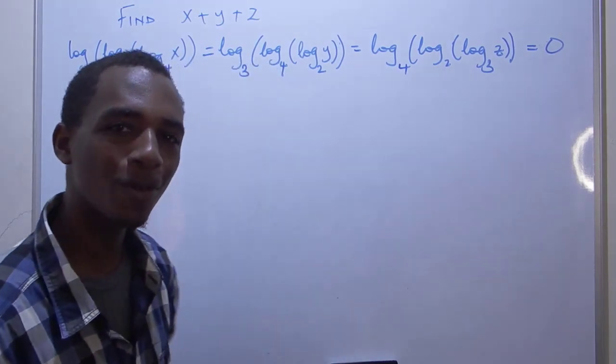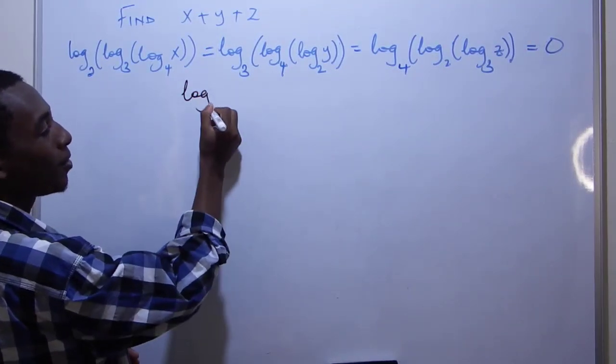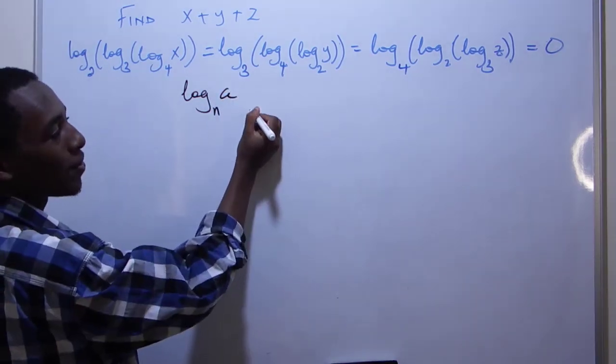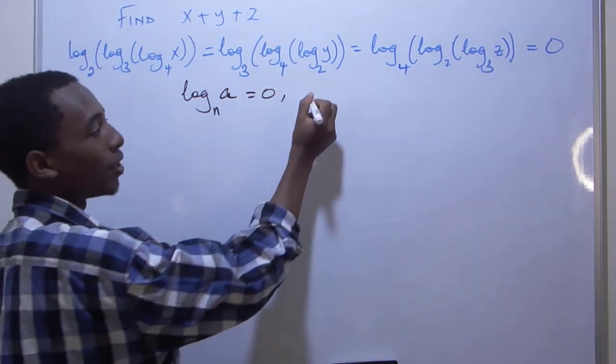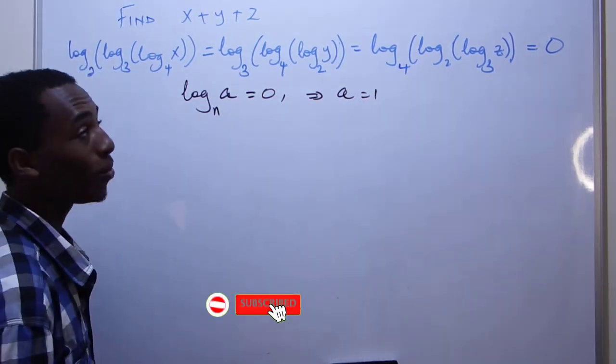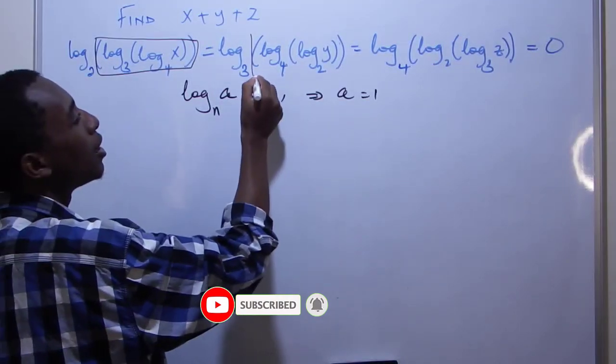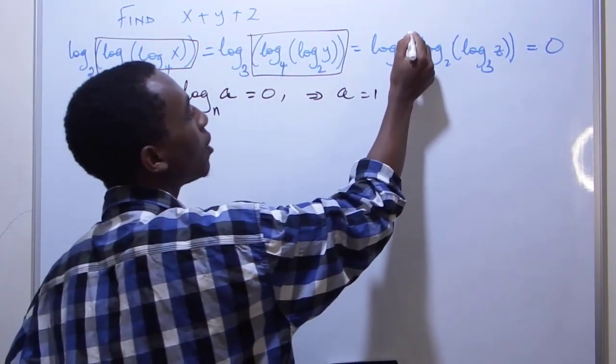which is a good thing for this equation because from all we understand about logarithms, if I have log to the base n of some argument a, if this equals to zero, then it implies that the argument is actually one. So that means each of these arguments here is going to be equal to one, right?